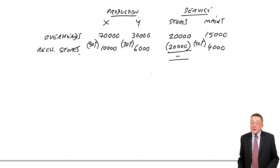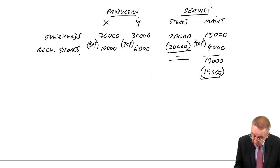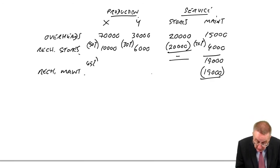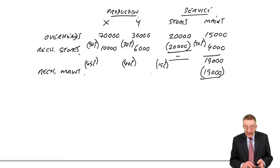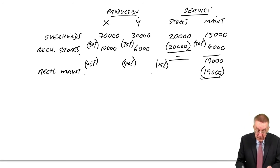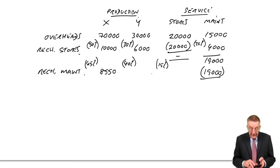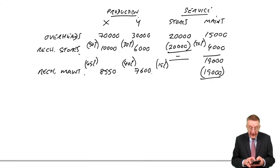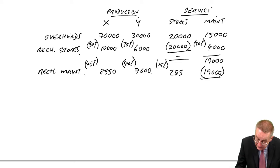So we've recharged stores. But in a similar way, maintenance is a service department and we need to recharge that. The total of maintenance now is 19,000. And let's recharge it. 45% of their work is for production X, 40% is for production Y. Oh dear, 15% is for stores.